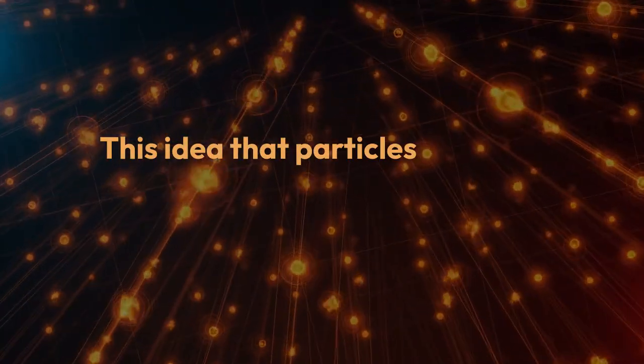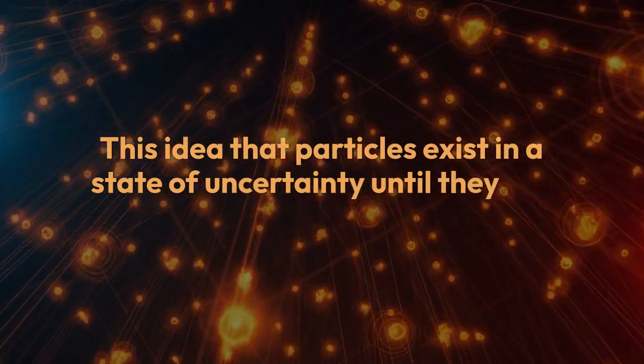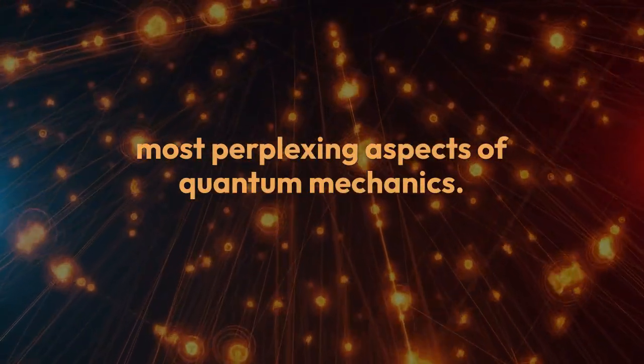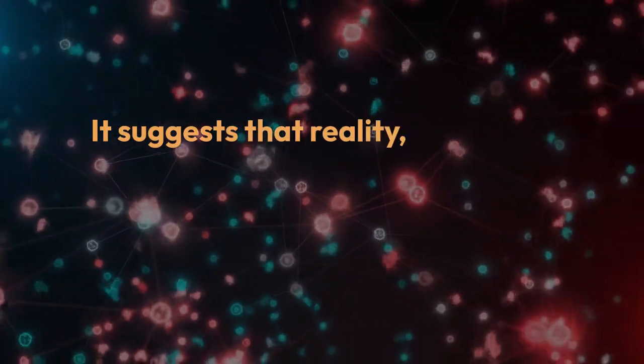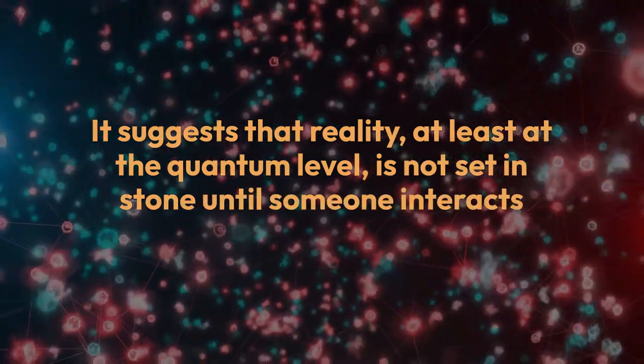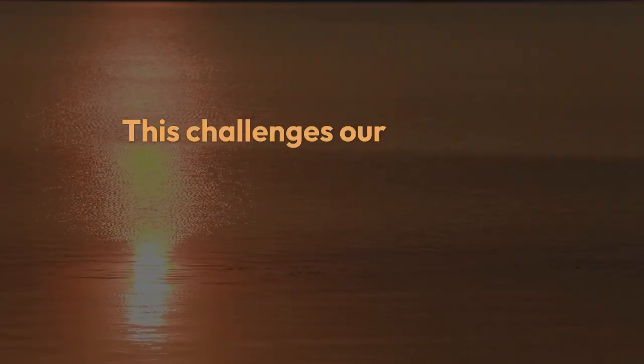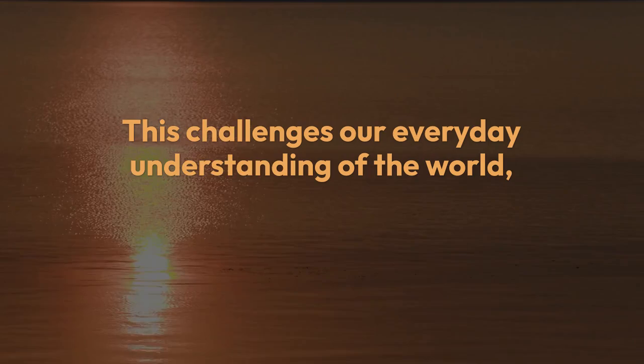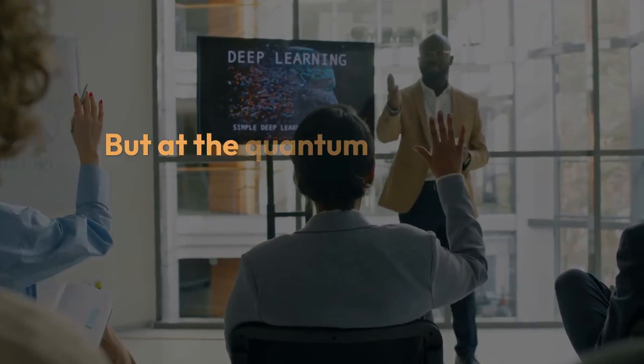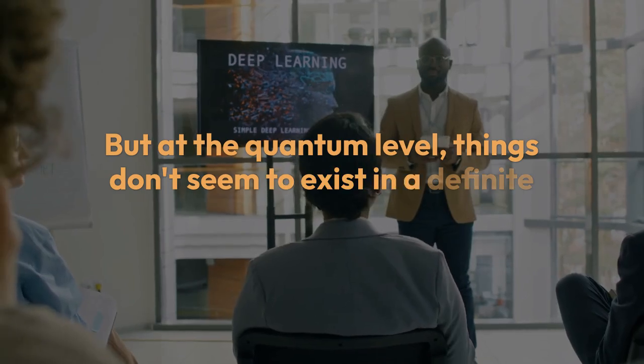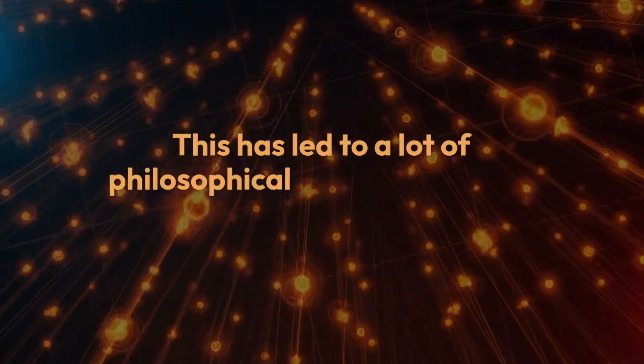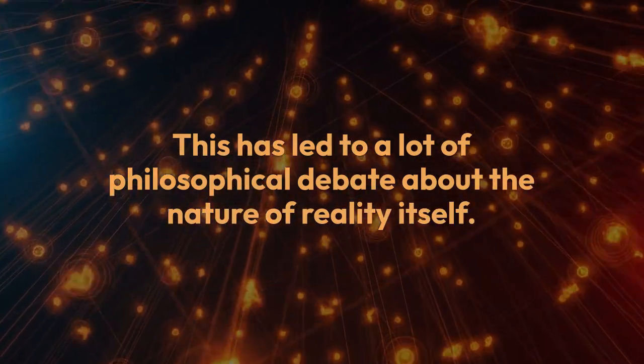This idea that particles exist in a state of uncertainty until they are measured leads to one of the most perplexing aspects of quantum mechanics. It suggests that reality, at least at the quantum level, is not set in stone until someone interacts with it. This challenges our everyday understanding of the world where objects exist whether we look at them or not. But at the quantum level, things don't seem to exist in a definite state until they are observed. This has led to a lot of philosophical debate about the nature of reality itself.